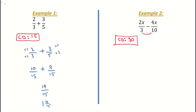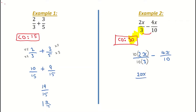I then write down my two fractions: 2x over 3 minus 4x over 10. I'll show you a slightly different method this time — rather than putting the little multiply outside the fraction, I'm going to incorporate it into the fraction. I go to my common denominator and see how many times 3 divides into 30 — it divides in 10 times. So I'm going to multiply the fraction 2x over 3 by 10 on the top and bottom. When I multiply that fraction, I get 10 by 2x, which is 20x, over 10 by 3, which is 30.